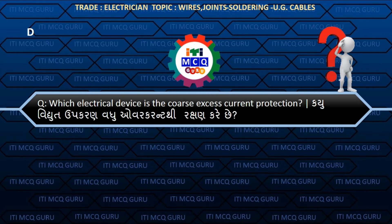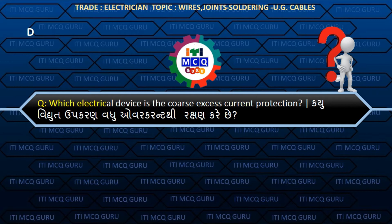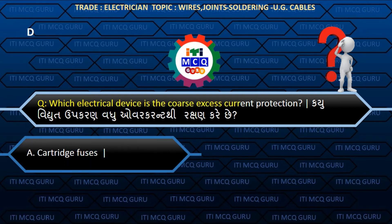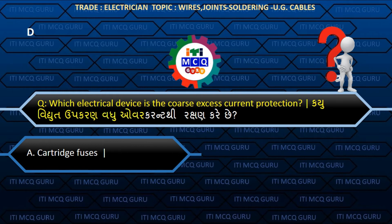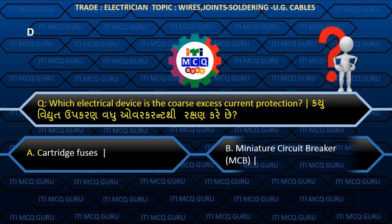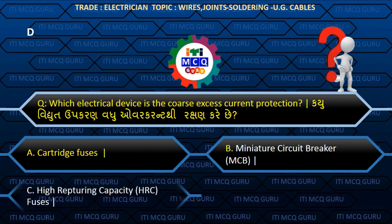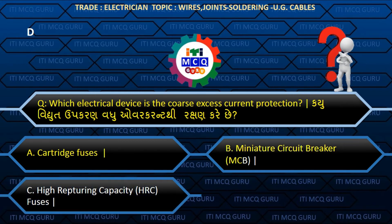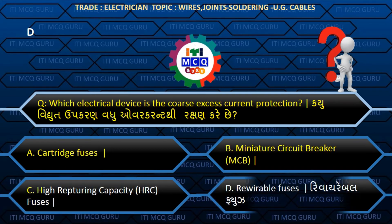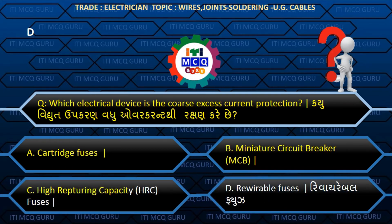Which electrical device provides coarse excess current protection? (Kyuu vidhudh upakarana vadhu over current thi rakshan kare chhe?) Answer D: Rewirable fuses.